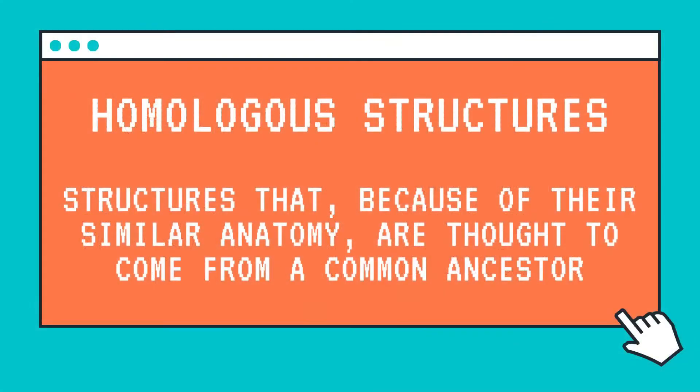Scientists who are looking for evidence of evolution, or of species changing over time, look to the anatomy of different creatures that they can find, both in present form and in what we can see through the fossil record. Some of the things they see have led them to believe that there may be changes in the anatomy of species over time. The first one is homologous structures.